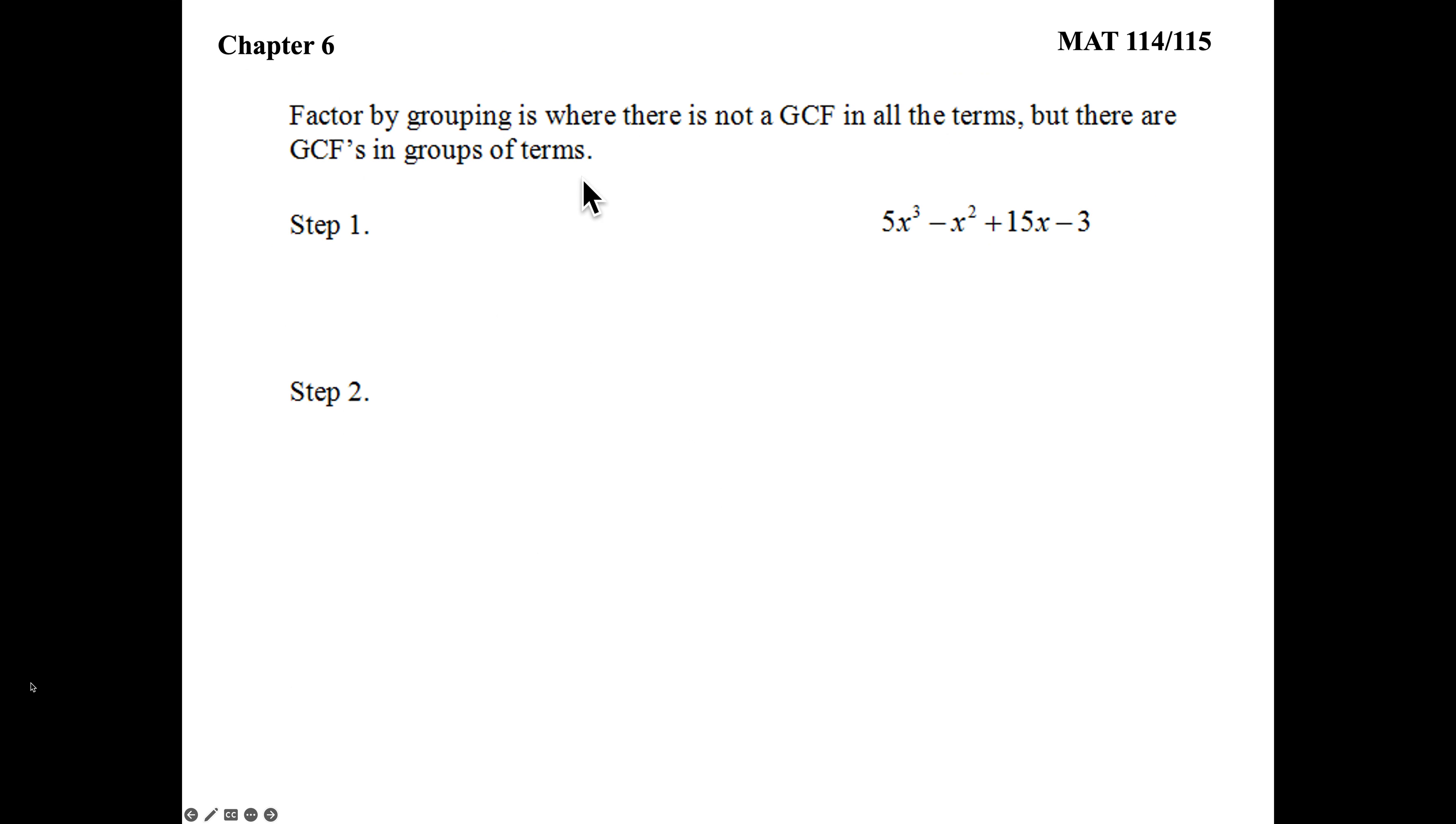So, we're going to take this GCF concept and now do factor by grouping, which is doing three GCFs. So, to start this off is that you're going to notice factor by grouping is done when there's no GCF in all the terms. x³, x², x¹, no x, can't take out a GCF of an x. 5, 1, 15, 3, no numerical GCF.